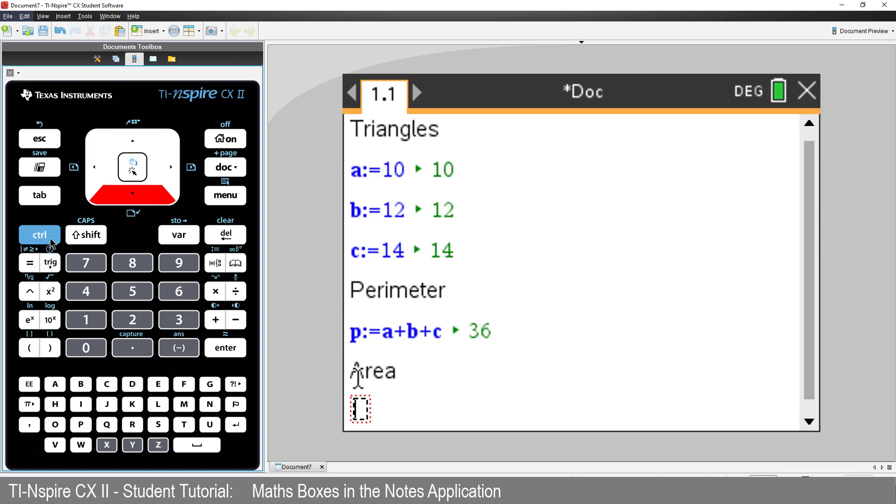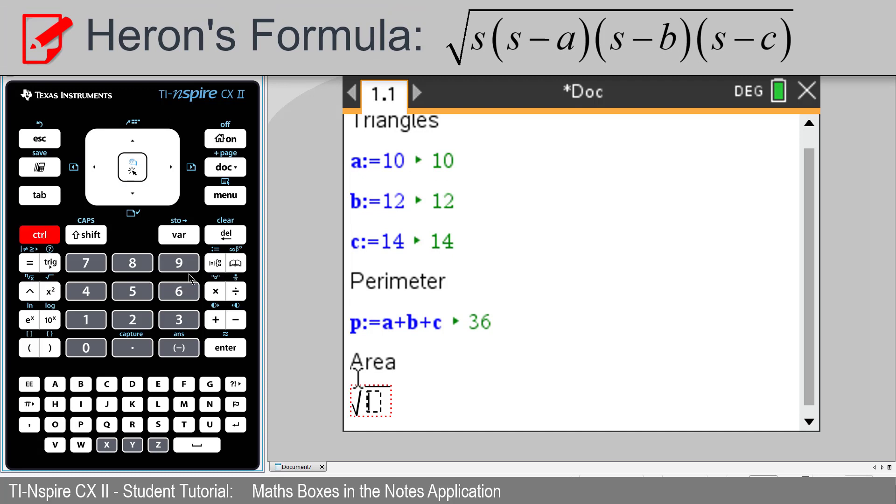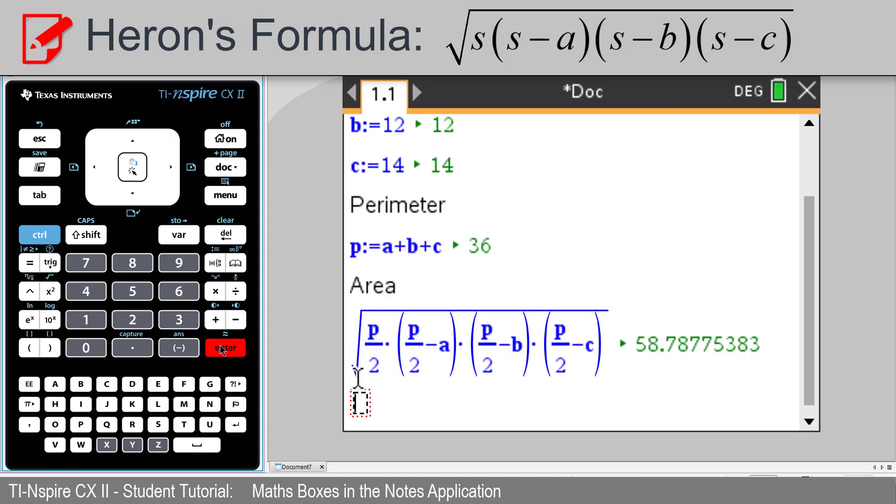But I can just divide P by 2. So we'll calculate the square root of P over 2 times P over 2 minus A, times brackets P over 2 minus B, times brackets P over 2 minus C. Then make sure you press enter to activate the maths box.